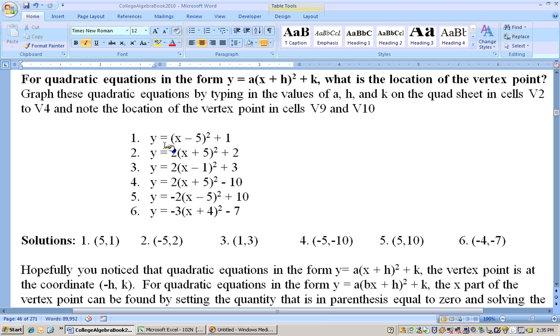What we can see is whenever you have a quadratic that is in this form right here, this standard form, then the vertex point is always the opposite of this number for X and this number right here for Y. So if you have an equation, let's say like this, X minus 5 squared plus 1, the vertex point is going to be at 5, 1. This one, it's going to be at negative 5, 2, 1, 3.